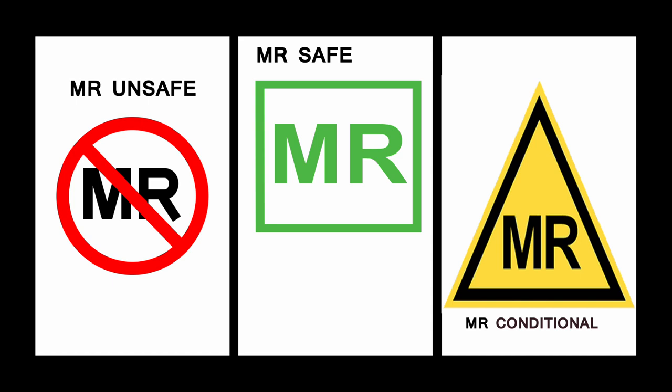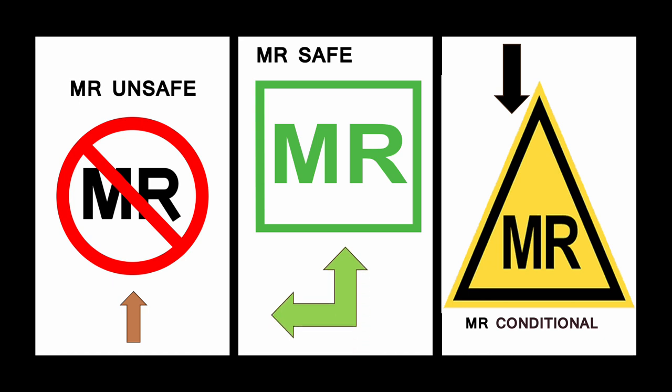These are some of the symbols you might come across that show different MRI implant safety labeling: 1. MRI unsafe, 2. MRI conditional implants, and 3. MRI safe implants.